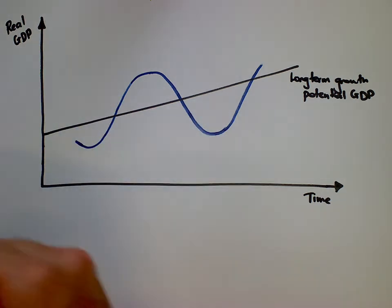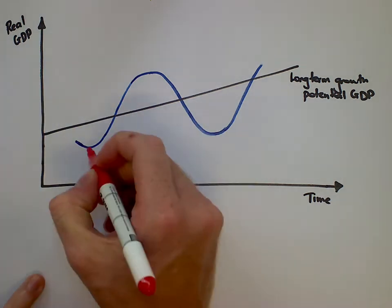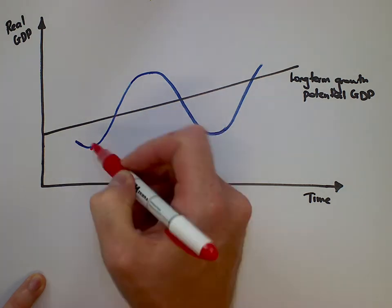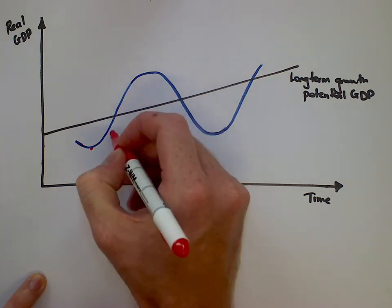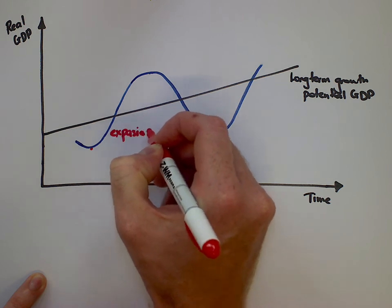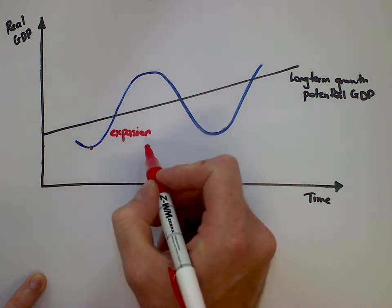All across in different parts of the business cycle we can call them different bits. So here is kind of a bottom of one of the cycles. As we start to go up, we call this a period of expansionary economic growth.